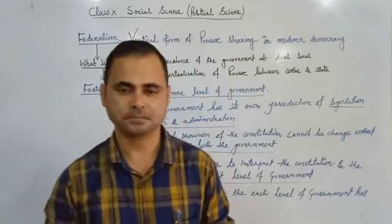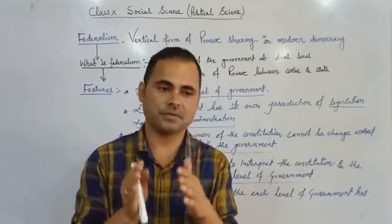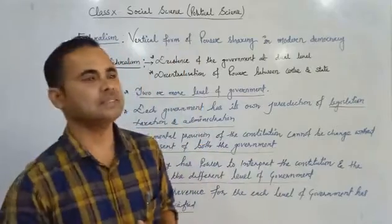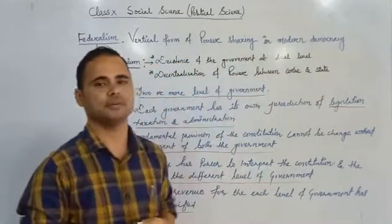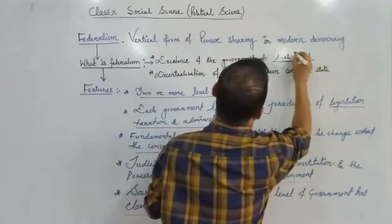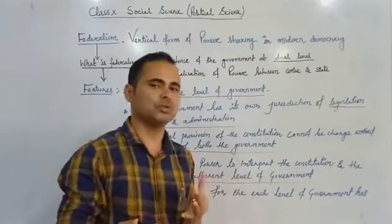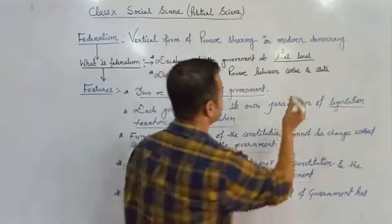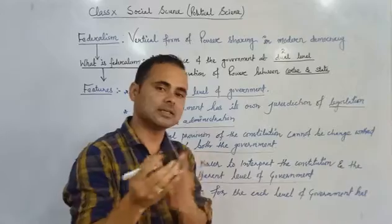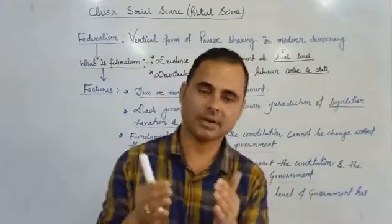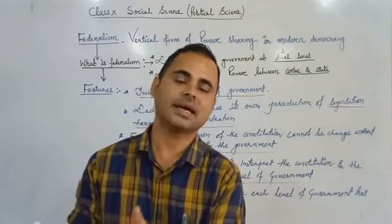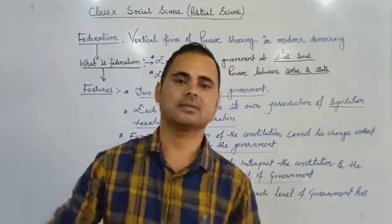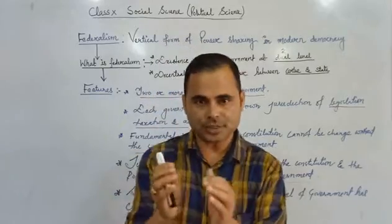Now let us try to understand what federalism is. If federalism is a vertical form of power sharing, then what is federalism? It is very simple: federalism means the existence of government at two or more levels, and there is a decentralization of powers between the center, state, and any other institutions. So federalism is the existence of government at two or more levels with decentralization of powers.